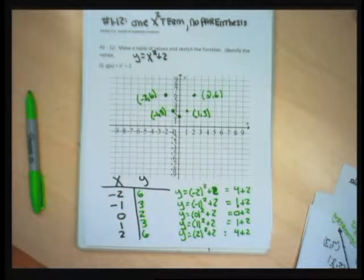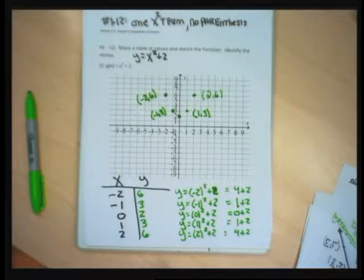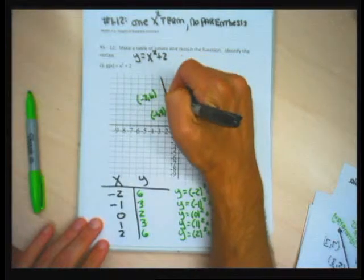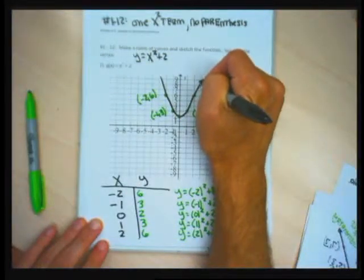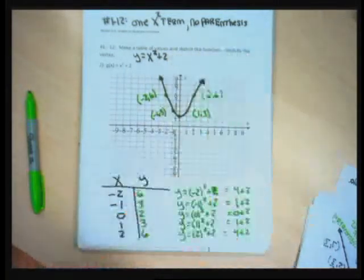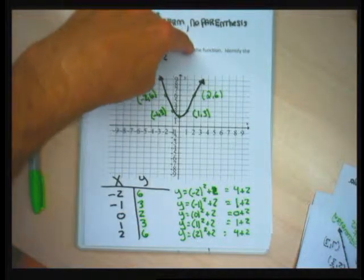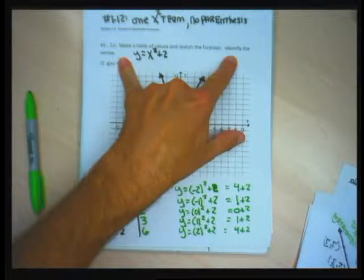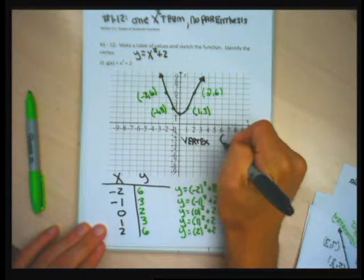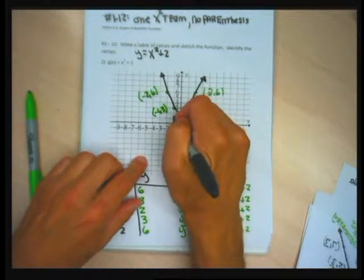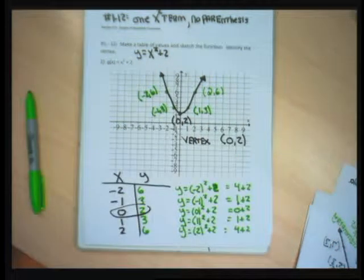Then y equals 1 squared plus 2 is 1 plus 2 which is 3, giving point (1, 3). And y equals 2 squared plus 2 is 4 plus 2 which is 6, giving point (2, 6). I found 5 points — that's generally what I do for all parabolas. If I pick my x's cleverly, 5 points will show the parabola start to form. I put little arrows at the edges signifying the graph keeps going. The vertex is the point (0, 2).